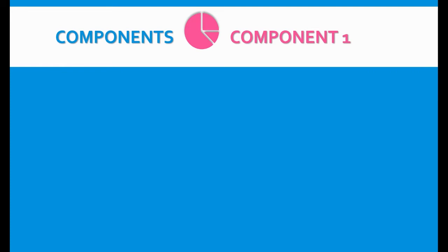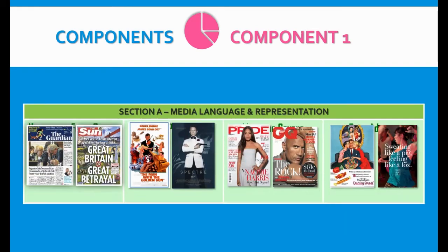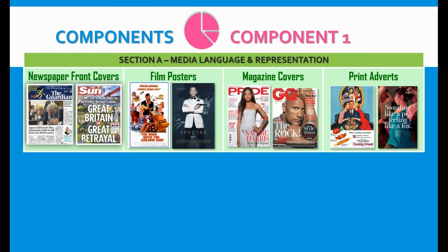Component 1 is a bit like an introduction to media studies. In Section A, we're only focusing on media language and representation — that means how are people being shown, how are different ideas being shown, what are the meanings behind the colours, behind pictures, behind the language.